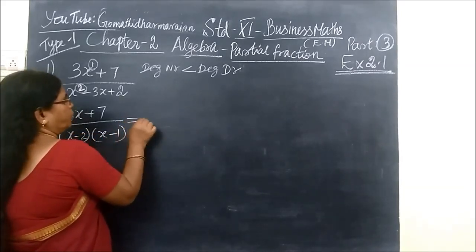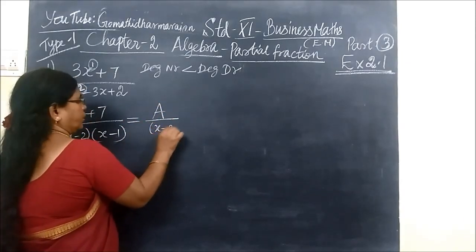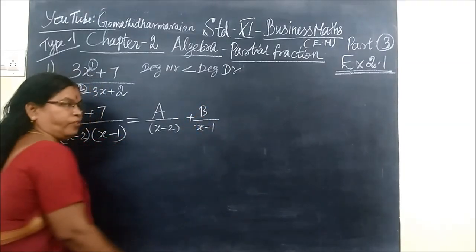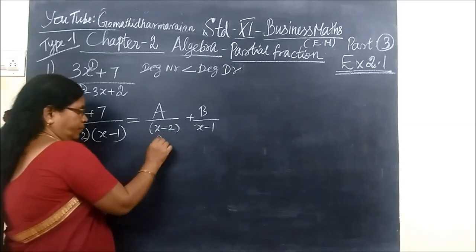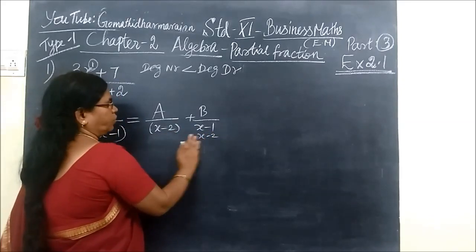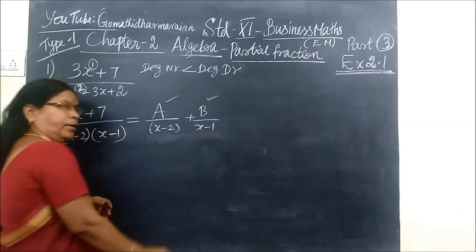When you want to do it as partial fraction, one constant by first factor plus another constant by second factor. The factors in the denominator, x minus 1 that way, x minus 2 that way also you can write. Either way, no problem. Later we are finding the value of A and B.